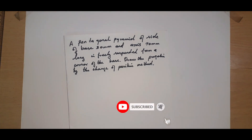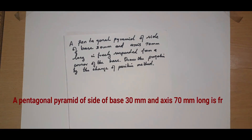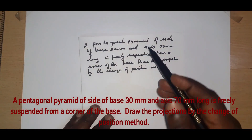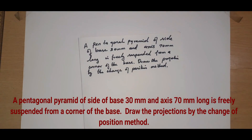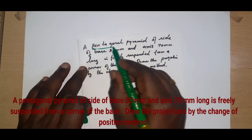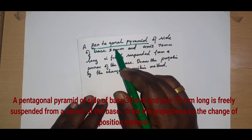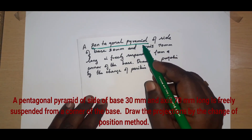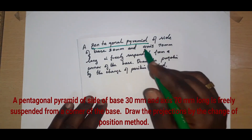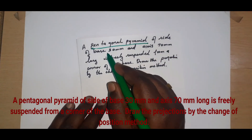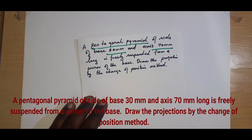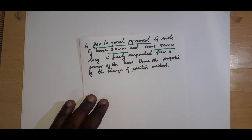Hello students, in this video we are going to see the suspended problem — a solid suspended problem. Look at the question: a pentagonal pyramid. The base will be a pentagon in shape, and since it is a pyramid, the bottom face will be pentagonal with an apex at top. The side of the base is 30mm and the axis height is 70mm — these are the given dimensions.